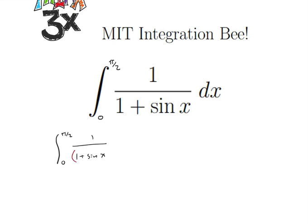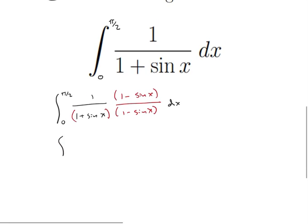Notice that if we multiply the top and bottom by the conjugate, so 1 minus sine of x over 1 minus sine of x, then we get a pretty cool trig identity that pops up. So let's go ahead and do that.